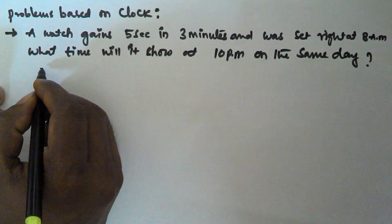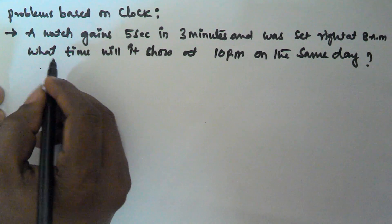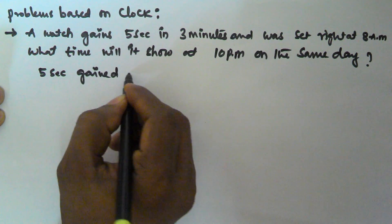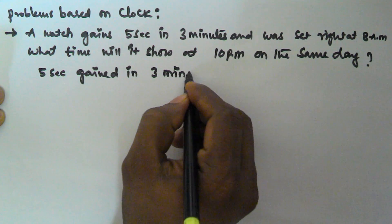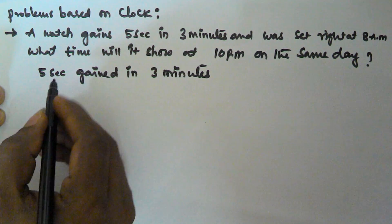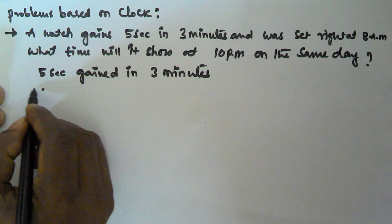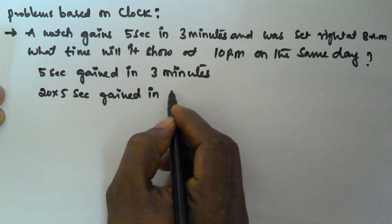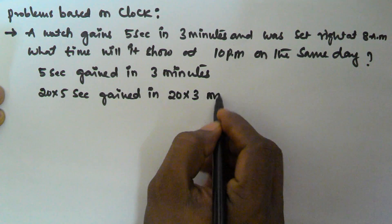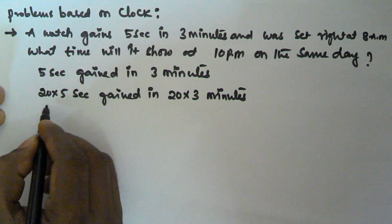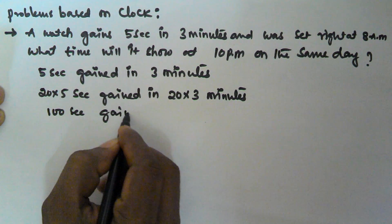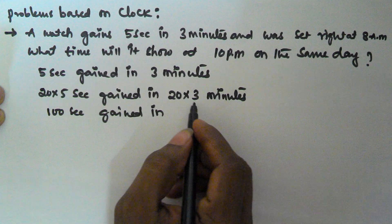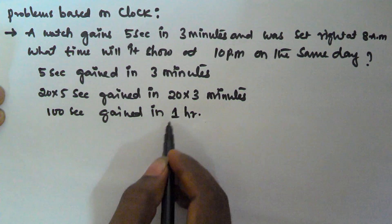It is given that 5 seconds are gained in 3 minutes. Multiplying both sides by 20: 20 × 5 = 100 seconds gained in 20 × 3 = 60 minutes. 60 minutes means 1 hour. So actually 100 seconds are gained in 1 hour.